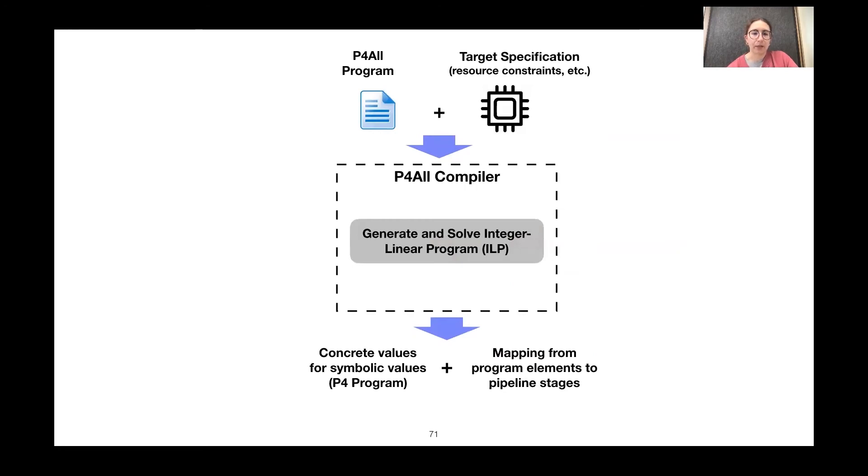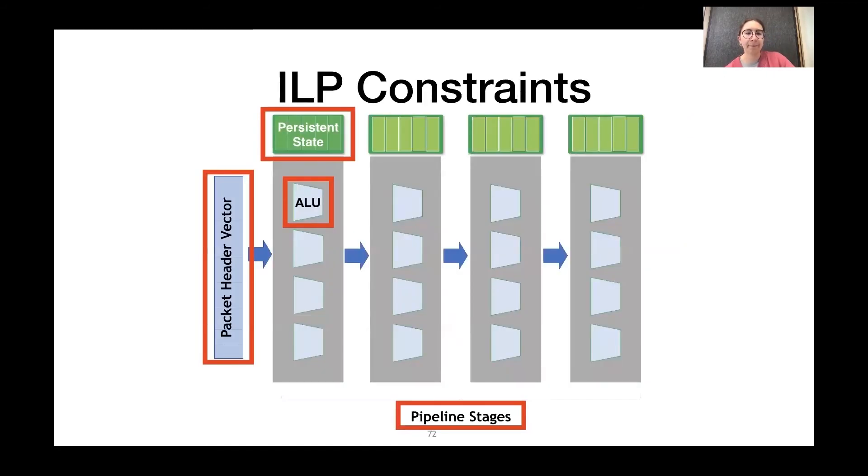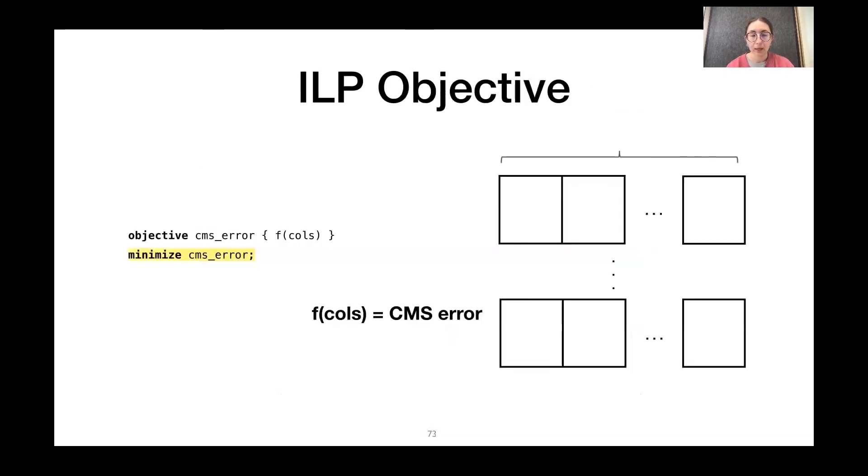So, under the hood, what's happening is we are generating and solving an integer linear program or an ILP. The constraints in our ILP correspond to the resource constraints of the switch. So, this ensures that the resulting solution will fit within the resources that are available on the switch. And the ILP objective that we're optimizing is the objective function in our P4All program. So, in this case, our ILP will find a solution that minimizes the error of the sketch.